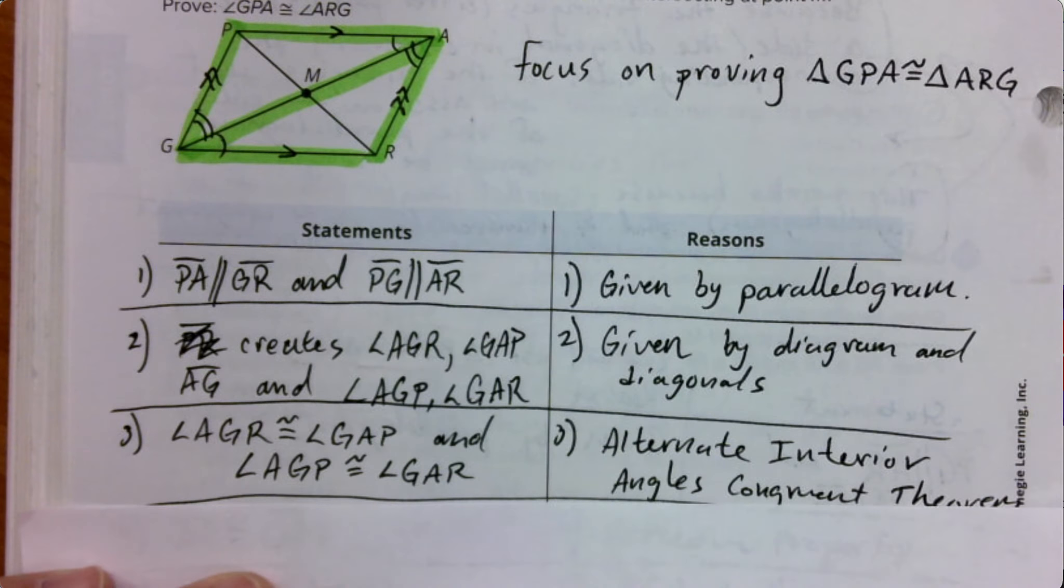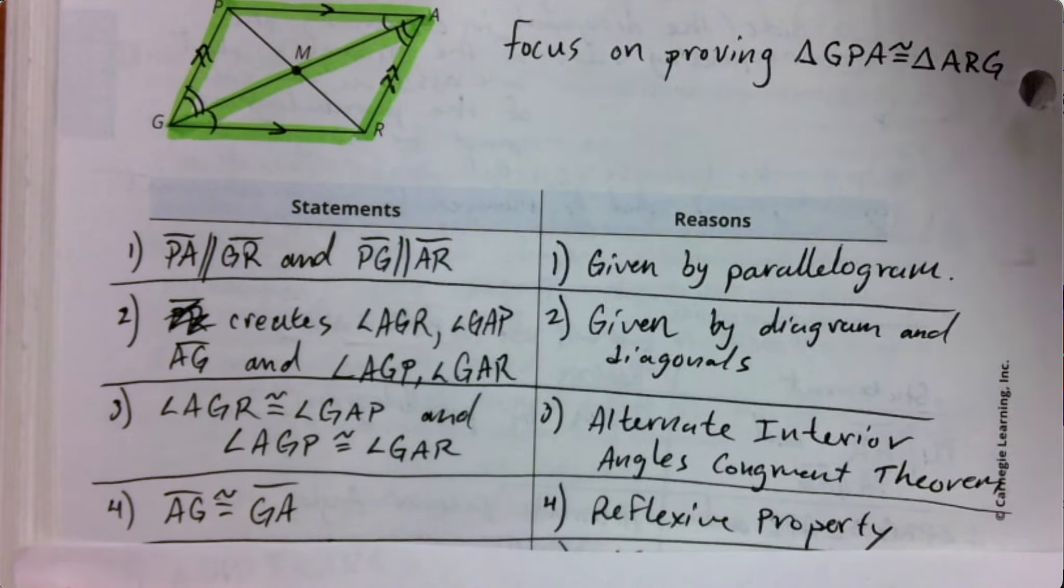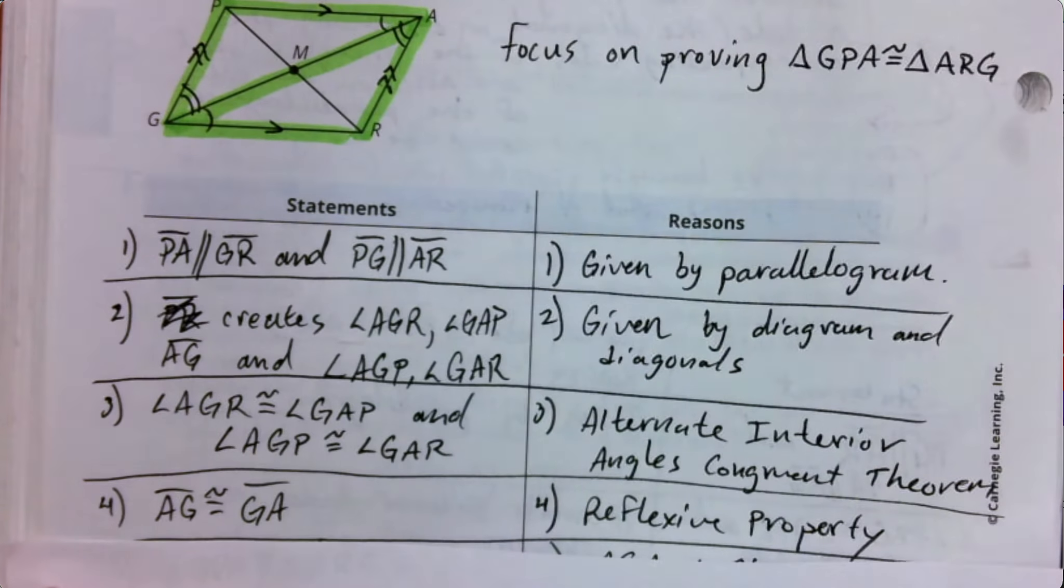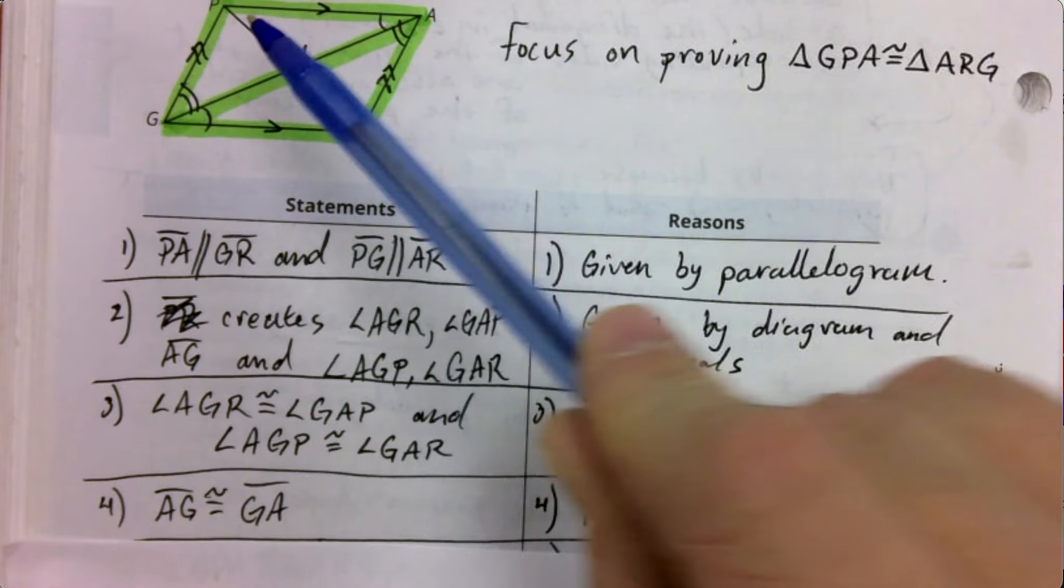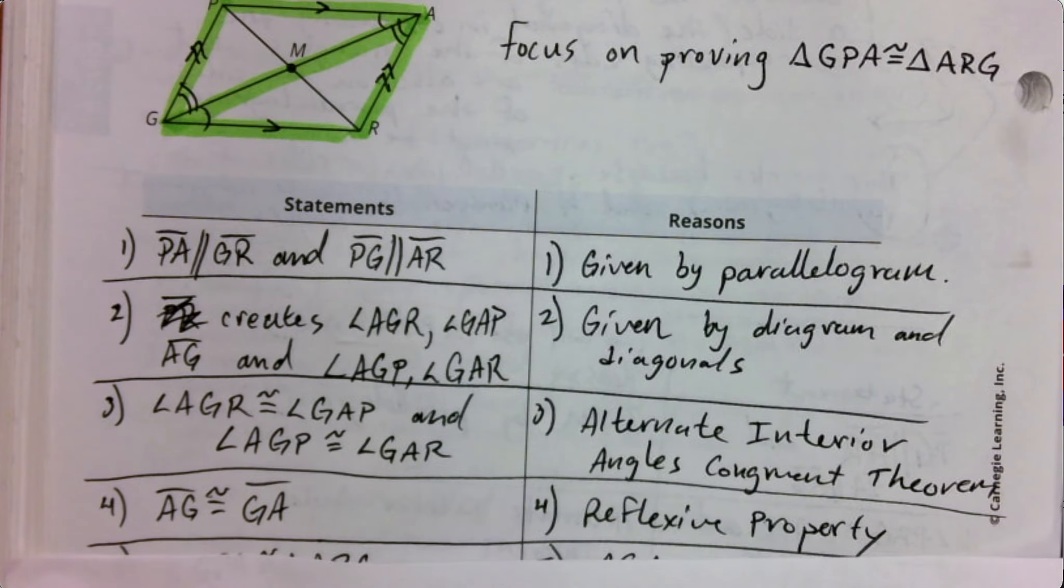And then just like in the previous page, the previous lesson there, the reflexive property lets us say that this line that is shared by both triangles, both triangles have this line in common. So it's therefore congruent to itself. And anytime things are congruent to themselves, we're just going to use the reflexive property.